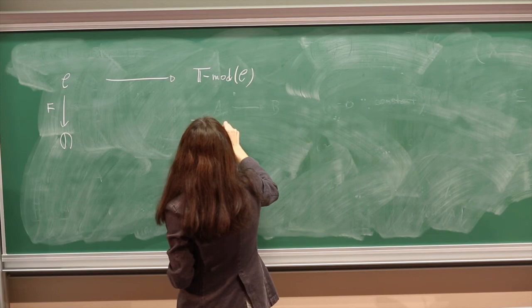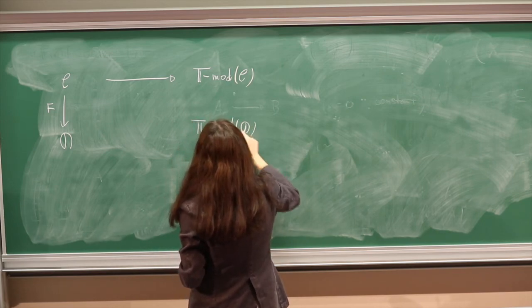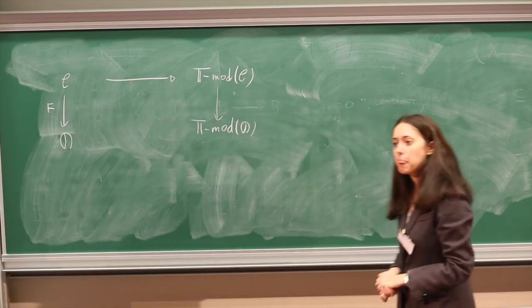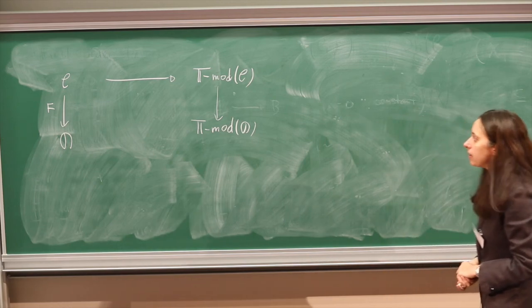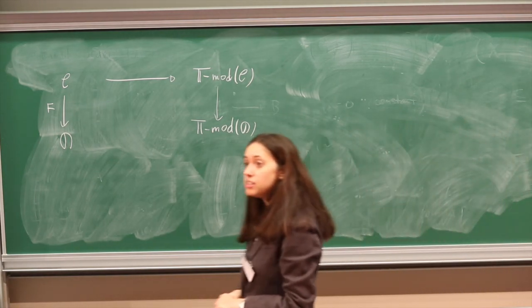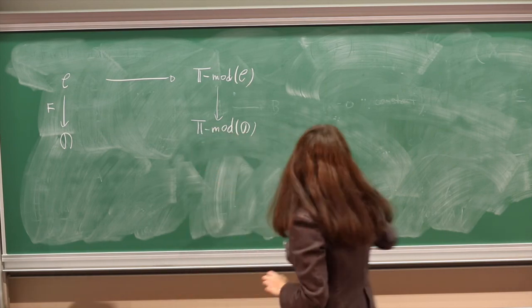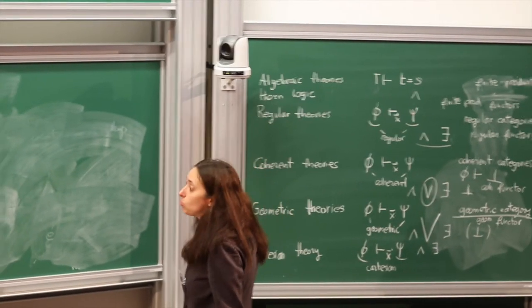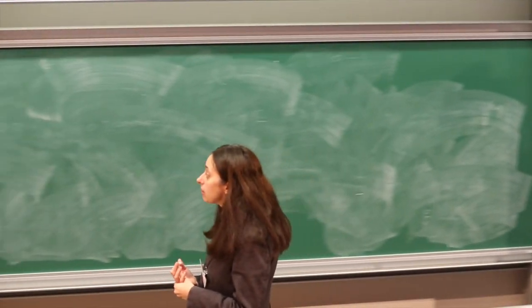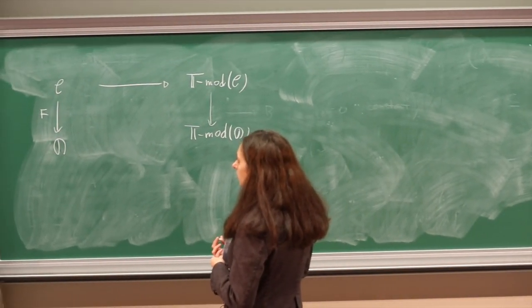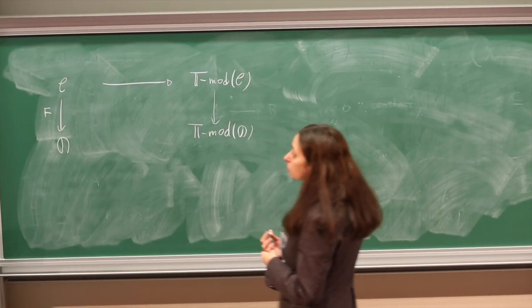So we have a very nice functorial model theory, to the point that we can define a two-functor which assigns to each category of the appropriate type the category of models of the theory. A very natural question is then: is this functor representable? The very good news is that it is, for all the fragments of logic we have considered, because there is a particular construction.